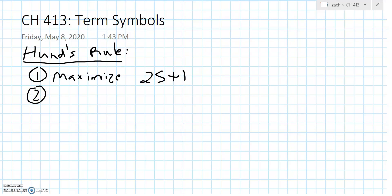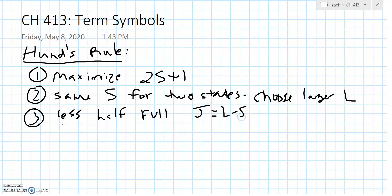The second rule says that if we have the same S, capital S for two states, we choose the larger L. And the third one says that if we have less than half full subshell, then we're going to have J equal to L minus S. If we have exactly half, it's going to be that J is equal to S, and if we have more than half, this is equal to J is equal to L plus S.